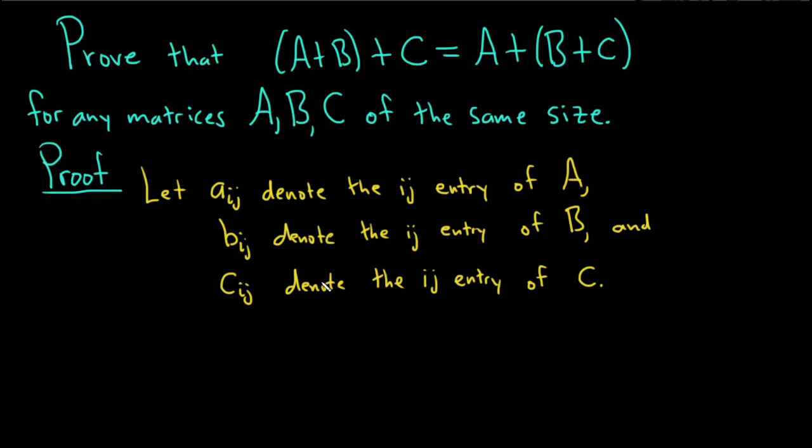Then, let's look at the left-hand side. So then, the ij entry of A+B, well, that's just the sum. So that will be the sum of the ij entry of A with the ij entry of B.